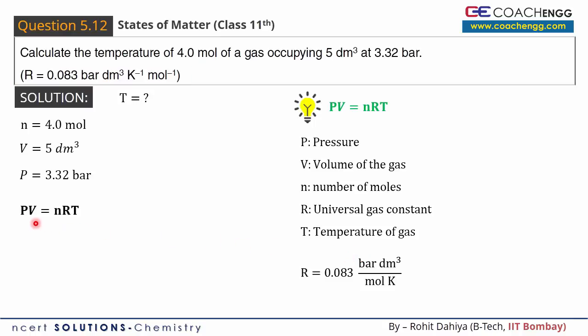I'll now put in the values. Pressure is 3.32 bar, volume is 5 dm³, equals number of moles which is 4, R value is 0.083, and temperature whose value we need to find.